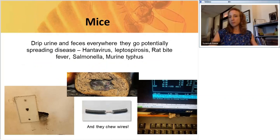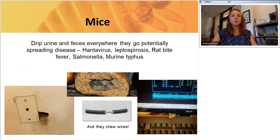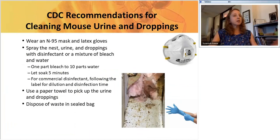Mice, in addition to the allergens and asthma they contribute to, also drip urine everywhere they go, spreading allergens and diseases. About 80% of homes in the U.S. have had mice. Some of the diseases we've heard about recently include Hantavirus, leptospirosis, rat bite fever, salmonella, and murine typhus. Not only the diseases, but mice also chew wires, which could be a fire hazard. There are CDC recommendations for cleaning up mice urine and nests because you don't want to become exposed to pathogens — the key is to wet them down with a disinfectant before cleaning.